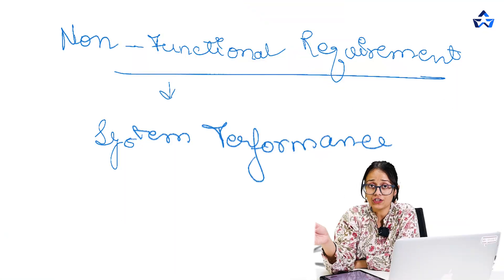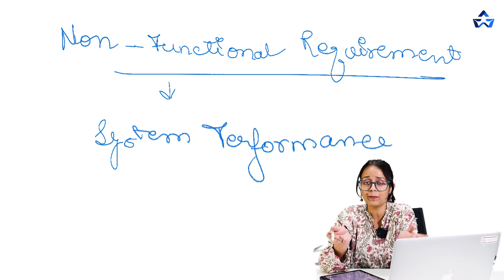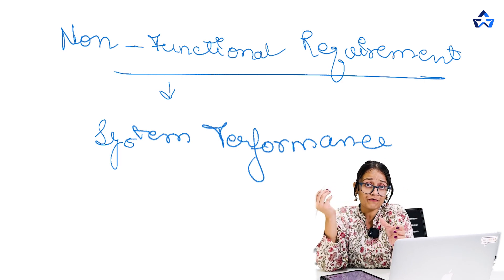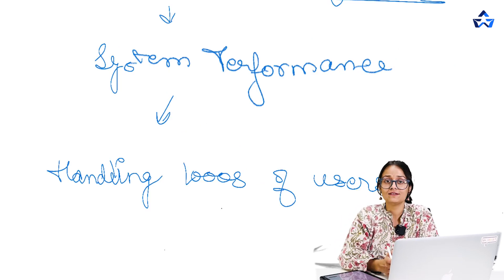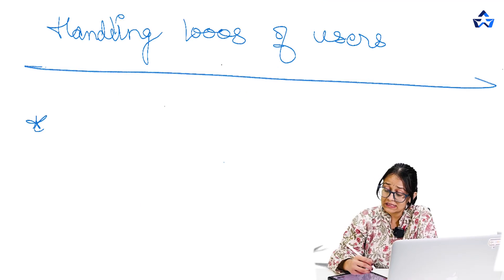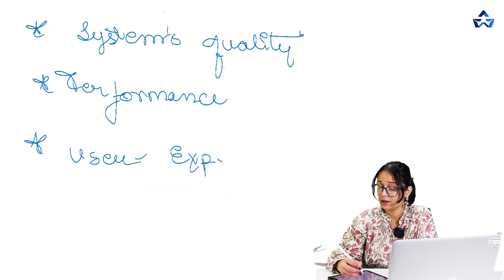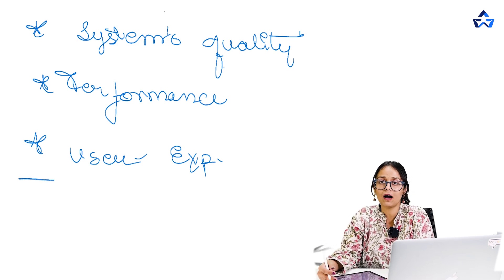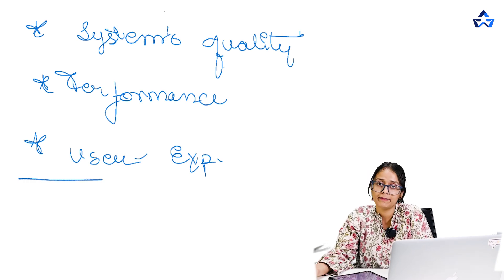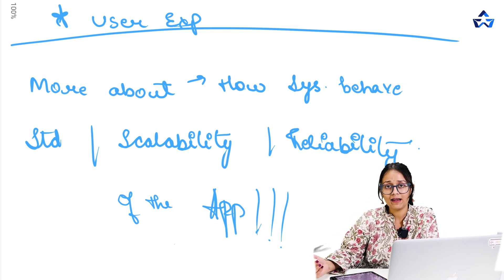Now moving on to non-functional requirements. Non-functional requirements refer to how well a system is performing — they are related to the system's performance. For our food delivery app, it means how well the app is performing, like how it will handle thousands of users smoothly. Non-functional requirements are more about the system's quality, performance, user experience, scalability, and reliability.